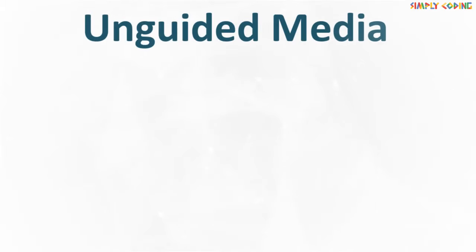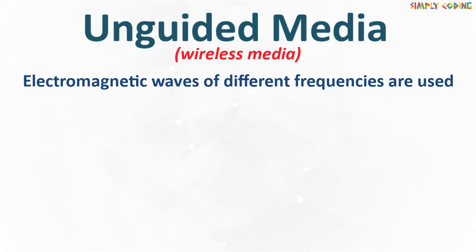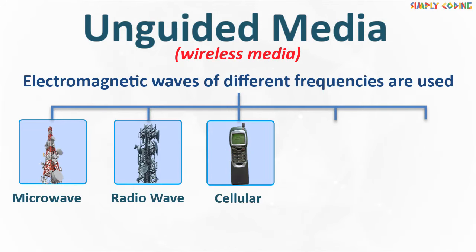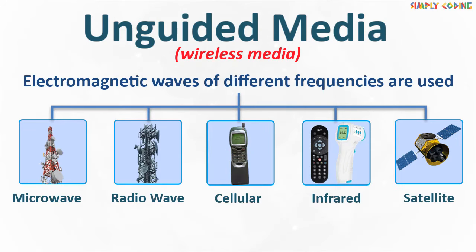Unguided media is also known as wireless media and can be used in places where it is impossible to install cables. Electromagnetic waves of different frequencies are used. Some examples of unguided media are microwave, broadcast radio, cellular radio, infrared, and communication satellites. Let's take a look at each of them.